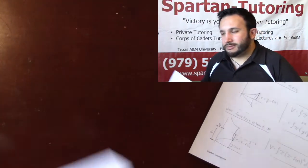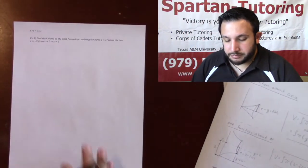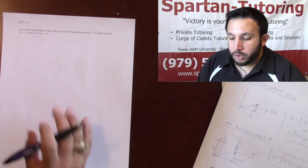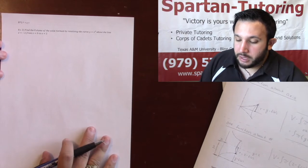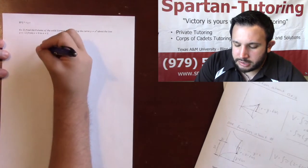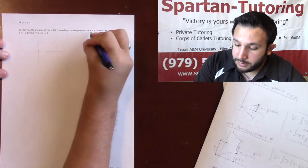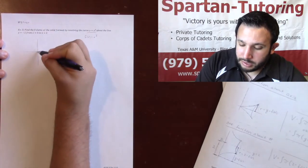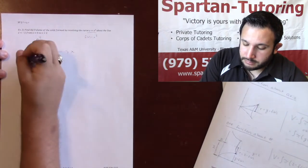Let's try number two: find the volume of the solid formed by revolving y equals x cubed about the line y equals negative two, between zero and two. Whenever you're rotating about something that's not an axis, it's definitely good to sketch it. So f(x) equals x cubed, between zero and two, looks something like this — here's x, here's y.